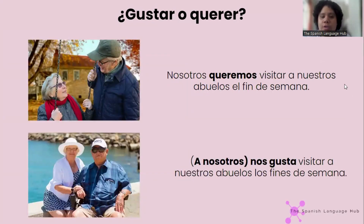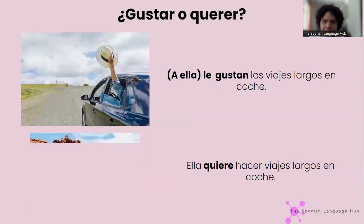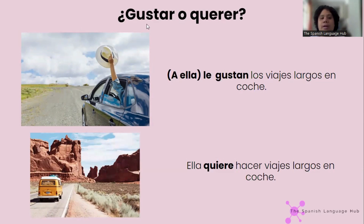Nosotros queremos visitar a nuestros abuelos el fin de semana — we want to visit our grandparents this weekend. Nos gusta visitar a nuestros abuelos los fines de semana — we like visiting our grandparents on weekends. A ella — optional, could be a María, a Julia, a Vanessa, etc. — le gustan los viajes largos en coche: she likes long trips by car. Ella quiere hacer viajes largos en coche: she wants to take long road trips.